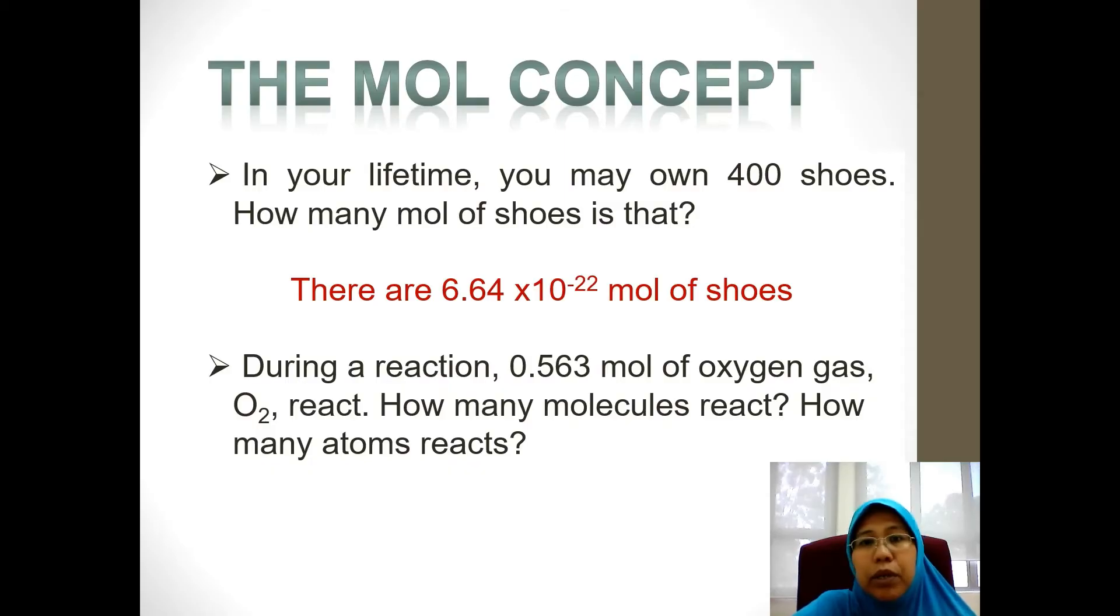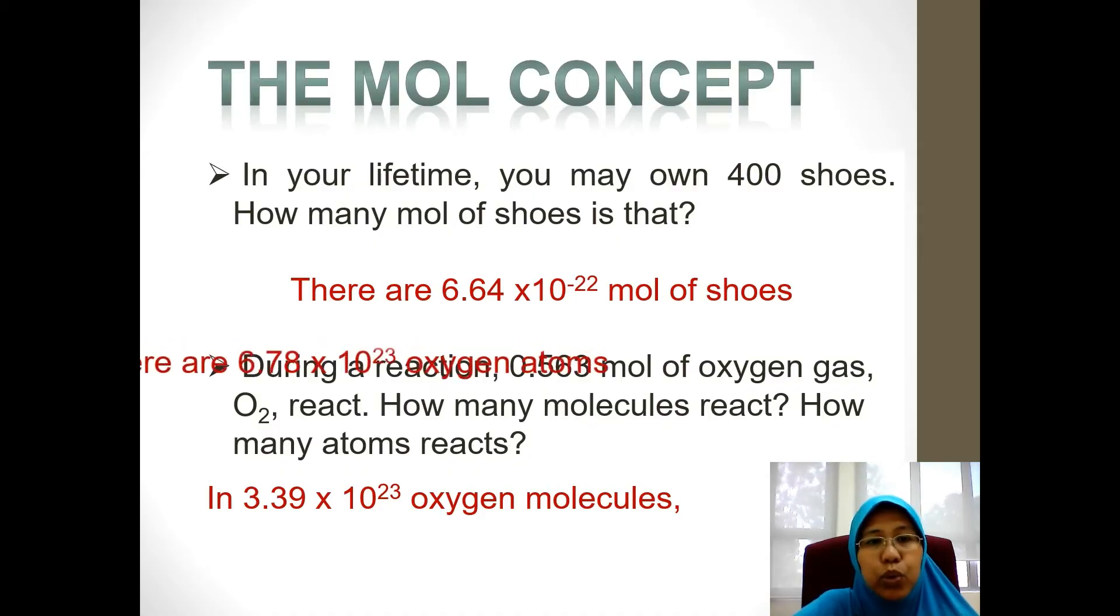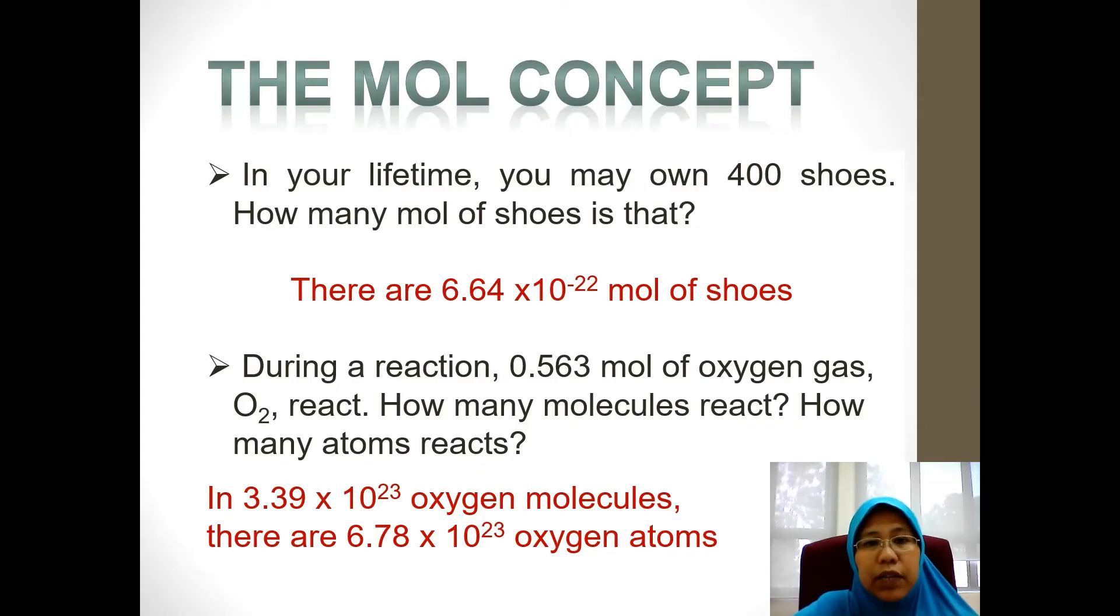So when you go to the lab, you are given 0.563 moles of oxygen gas, so how many molecules are there? You multiply that with the Avogadro number, that is 3.39 times 10 to the power of 23 oxygen molecules. Remember that one molecule oxygen has two oxygen atoms, so you're going to multiply this number of molecules with two and you're going to get 6.78 times 10 to the power of 23 oxygen atoms present in 0.563 moles of oxygen gas.